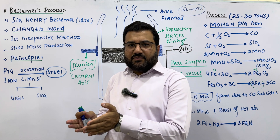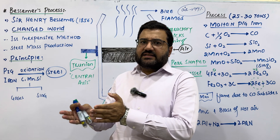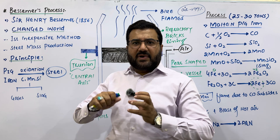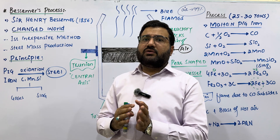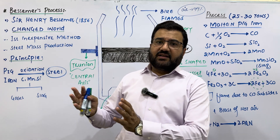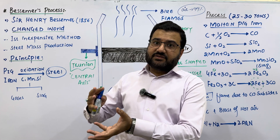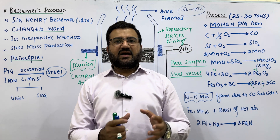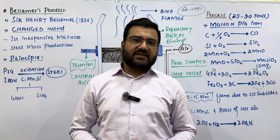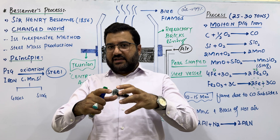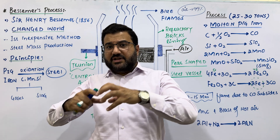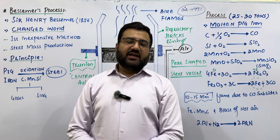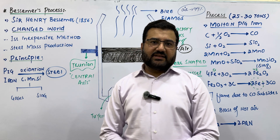Before the introduction of the Bessemer process, steel was manufactured by a very difficult method of stirring and melting, and it took almost days to manufacture tons of steel — and that steel was very expensive. But after the Bessemer process, fast mass production of steel started and the cost of steel was greatly reduced in the market, making steel a very economical alloy for daily life.